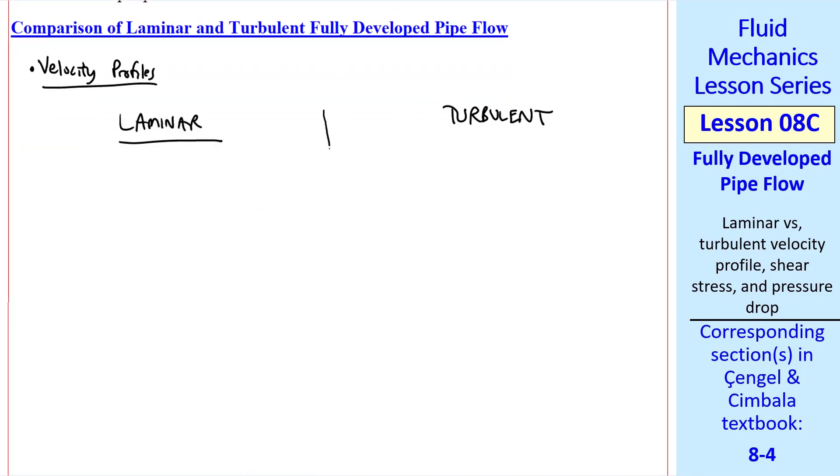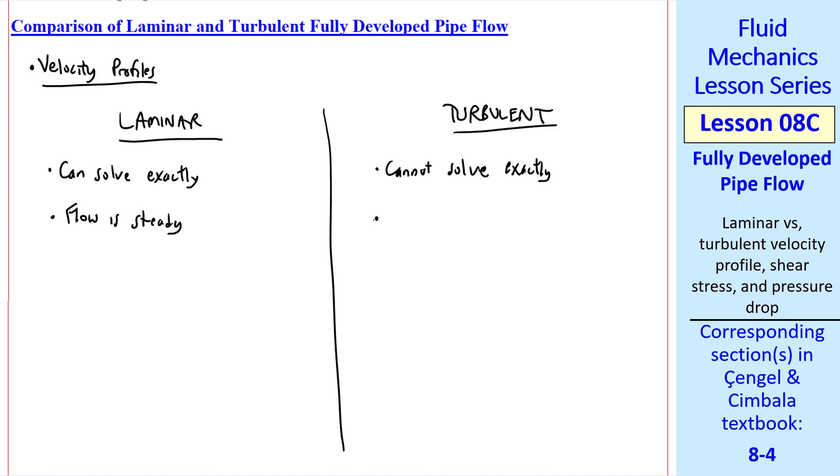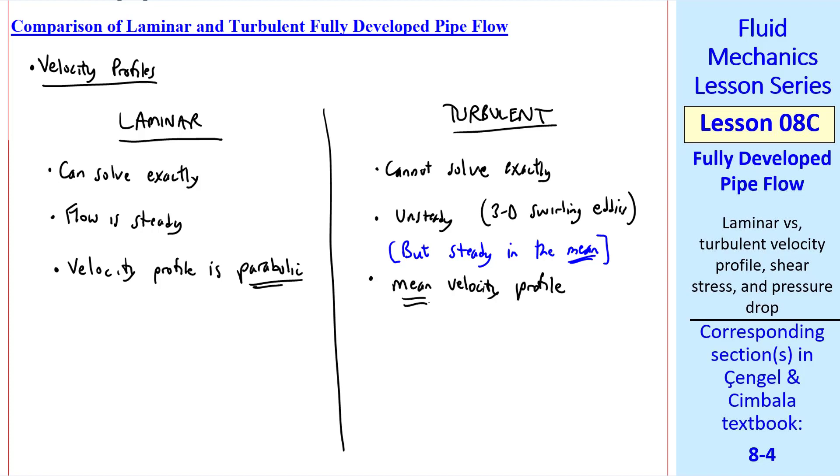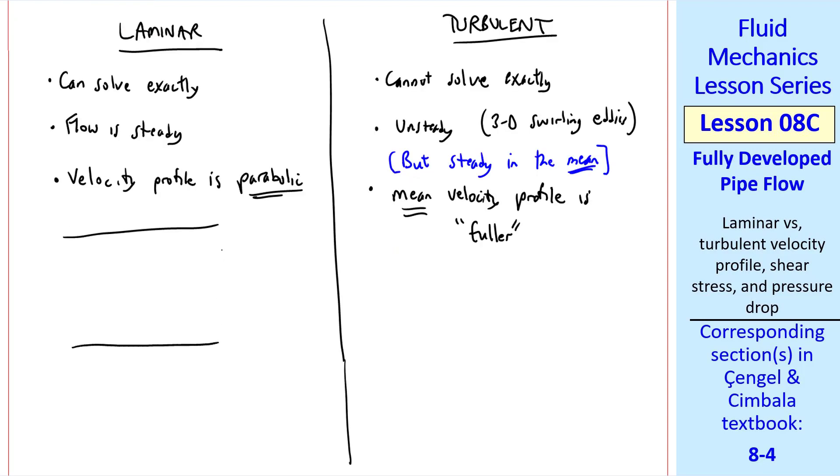First, let's compare laminar and turbulent fully developed pipe flow. First, we look at velocity profiles. I'll split the page in half between laminar and turbulent flow. It turns out that we can solve laminar fully developed pipe flow exactly. We'll do that in a later lesson. But there is no analytical solution for turbulent fully developed pipe flow. For laminar flow, the flow is steady. Turbulent flow is always unsteady. Recall we mentioned the 3D swirling eddies that you get in a turbulent flow. But a turbulent pipe flow can be steady in the mean.